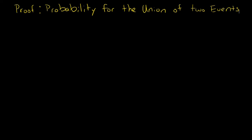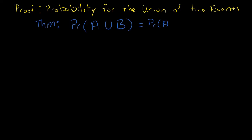In this video I'm going to discuss the proof for the probability of the union of two events. The theorem states that for any two events, the probability of A union B equals the probability of A plus the probability of B minus the probability of AB.